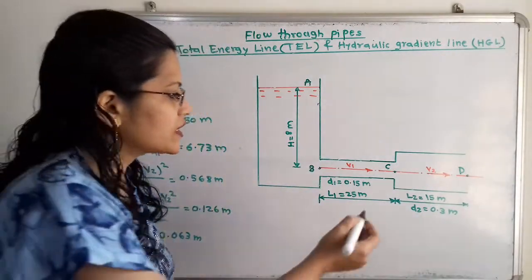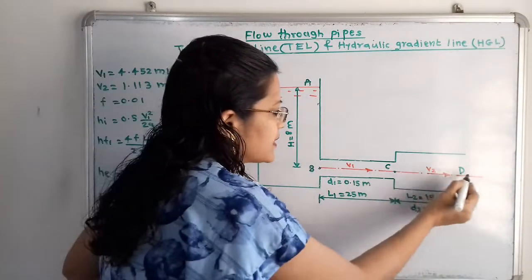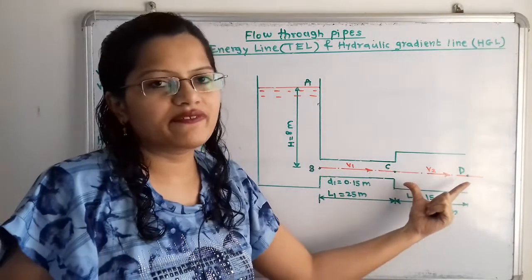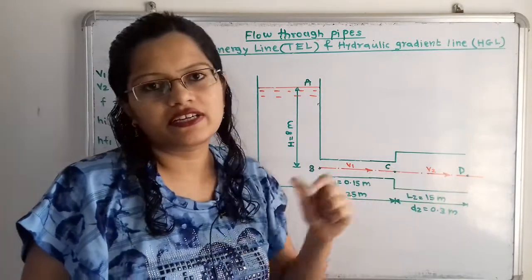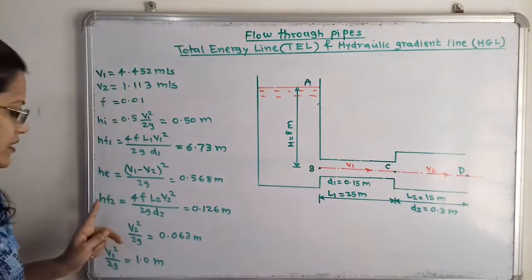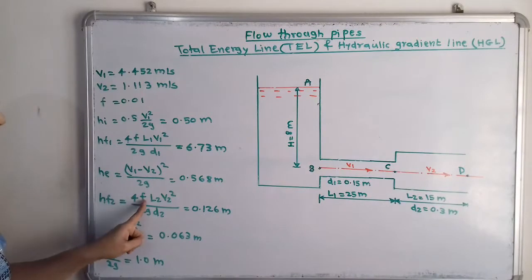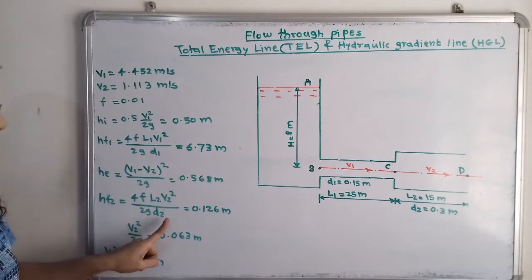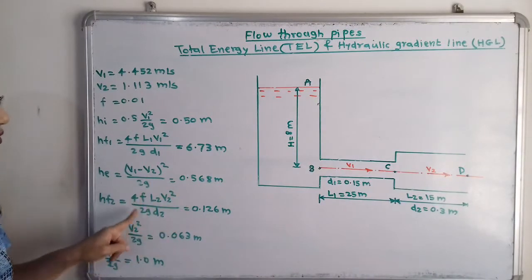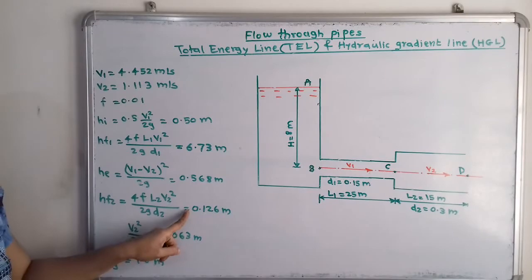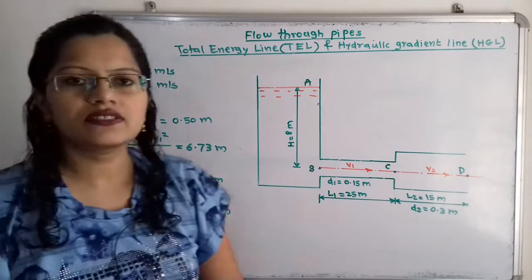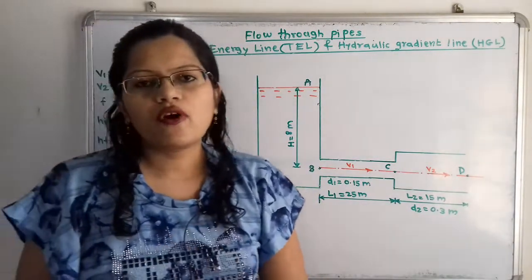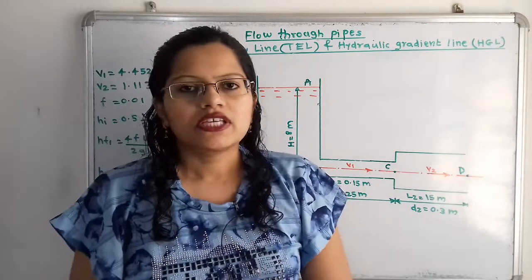For the head loss due to friction in pipe two, we refer to the data for pipe two: hf2 = 4f × l2 × v2² / (2g × d2). When we put in the values, hf2 = 0.126 meters.